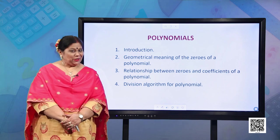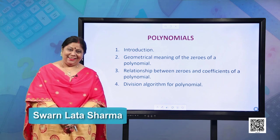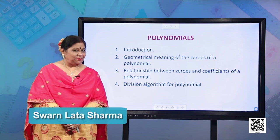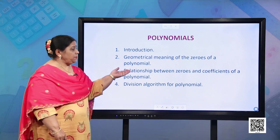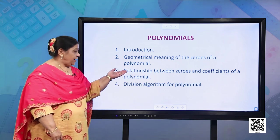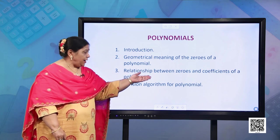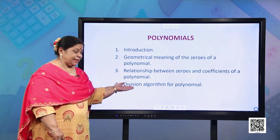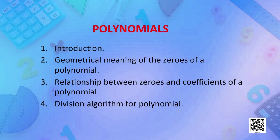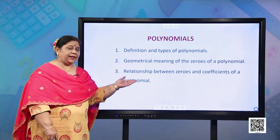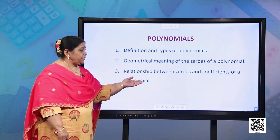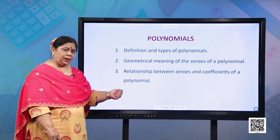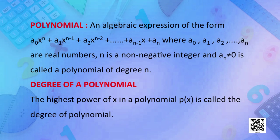Hello students, how are you? I hope you all are fine. Today let us start a new chapter on polynomials. In this chapter we shall look into the introduction, geometrical meaning of the zeros of a polynomial, relationship between zeros and coefficients of a polynomial, and the division algorithm for polynomials. In this episode we shall cover the definition and types of polynomials, geometrical meaning of the zeros, and relationship between zeros and the coefficients. As we have studied this chapter earlier, let us quickly recapitulate what we have studied before.